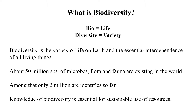First we have to know what biodiversity is. It's bio and diversity — bio means life and diversity means variety. So biodiversity basically means the variety of life on Earth and the essential interdependence of all living things. That is the definition of biodiversity. The definition has changed over time, but the basic definition is simple: variety of life on Earth and the essential interdependence of all living things.